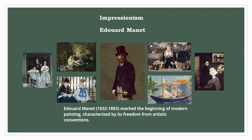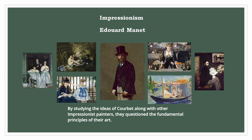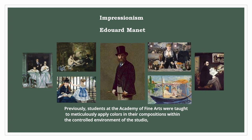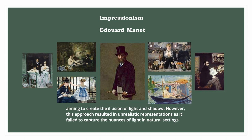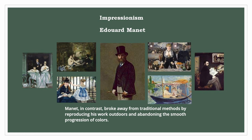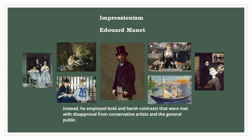Édouard Manet (1832–1883) marked the beginning of modern painting, characterized by its freedom from artistic conventions. By studying the ideas of Courbet along with other Impressionist painters, they questioned the fundamental principles of their art. Previously, students at the Academy of Fine Arts were taught to meticulously apply colors within the controlled environment of the studio, aiming to create the illusion of light and shadow. However, this approach resulted in unrealistic representations, failing to capture the nuances of light in natural settings. Manet broke away from traditional methods by reproducing his work outdoors and employing bold and harsh contrasts, which were met with disapproval from conservative artists and the general public.